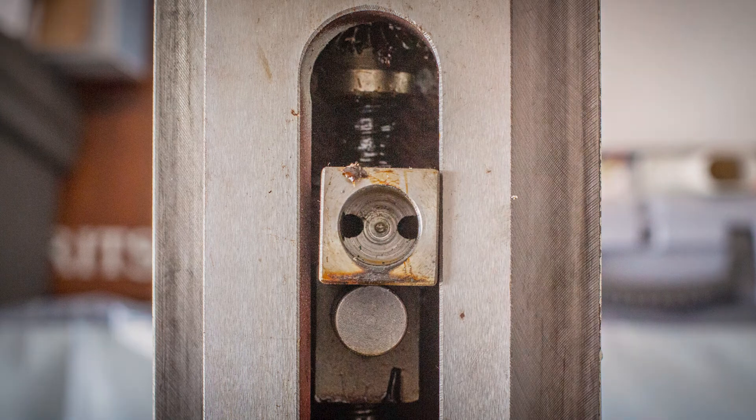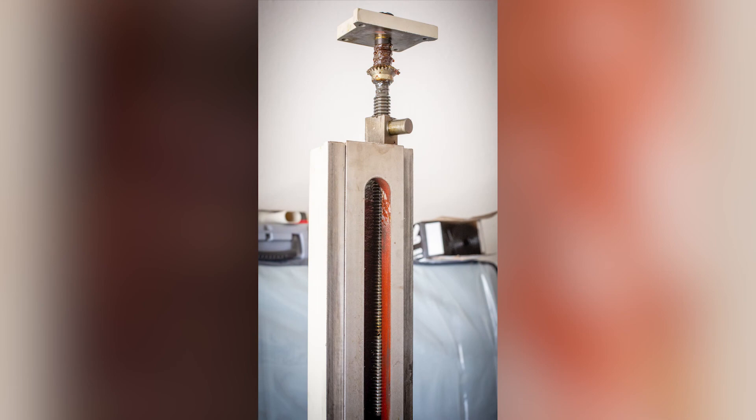And now, with everything out of the way, the z-axis lead screw can be lifted out the top of the column. Leaving the lead screw attached to the column top plate prevents the lead screw from dropping down inside the column.